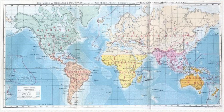Biogeography is the study of the distribution of species and ecosystems in geographic space and through geological time. Organisms and biological communities often vary in a regular fashion along geographic gradients of latitude, elevation, isolation and habitat area.